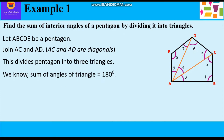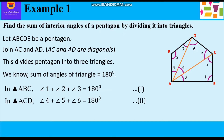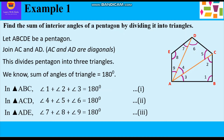So accordingly, in triangle ABC: angle 1 plus angle 2 plus angle 3 is equal to 180 degrees. This is equation 1. Similarly, in triangle ACD: angle 4 plus angle 5 plus angle 6 is equal to 180 degrees. This is equation 2. In triangle ADE: angle 7 plus angle 8 plus angle 9 is equal to 180 degrees. This is equation 3.